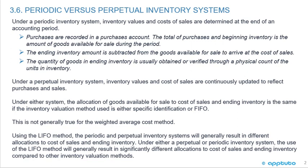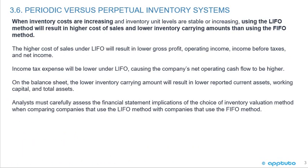Under either a perpetual or periodic inventory system, the use of the LIFO method will generally result in significantly different allocations to cost of sales and ending inventory compared to other inventory valuation methods. When inventory costs are increasing and inventory unit levels are stable or increasing, using the LIFO method will result in higher cost of sales and lower inventory carrying amounts than using the FIFO method. The higher cost of sales under LIFO will result in lower gross profit, operating income, income before taxes, and higher net income. Income tax expense will be lower under LIFO, causing the company's net operating cash flow to be higher.